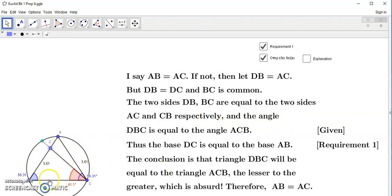And therefore, the angle, well, it's given the angle DBC, this blue angle, is equal to the angle ACB. So thus, the base DC, this base, as I explained to you earlier, this base of the blue angle is equal to base AB of this blue angle, right?